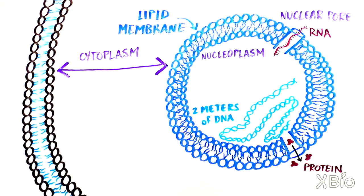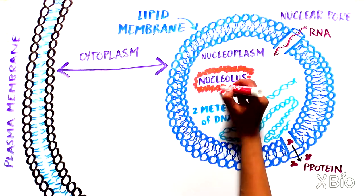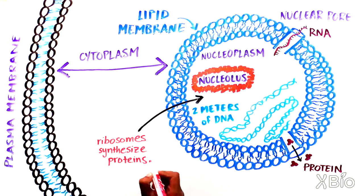The cytoplasm is the name for the entire space between the nucleus and the plasma membrane. Inside of the nucleus sits the nucleolus, an organelle within an organelle. The nucleolus, which is an example of a non-membrane-bound organelle, is involved in making ribosomes, particles that synthesize proteins.